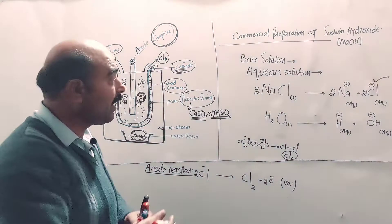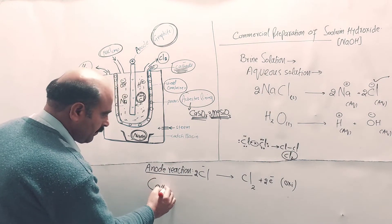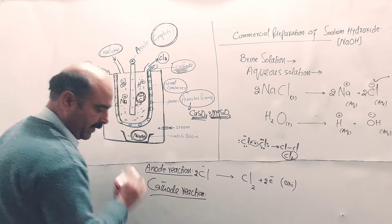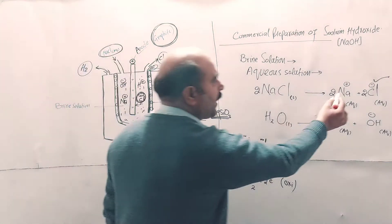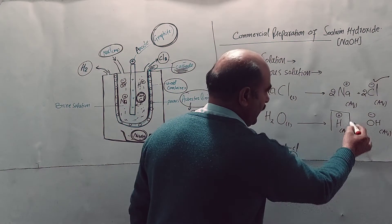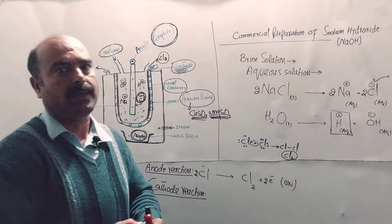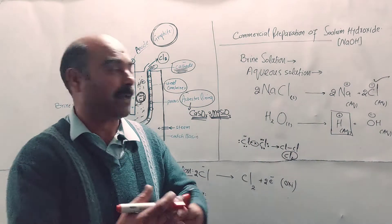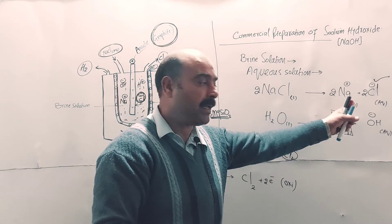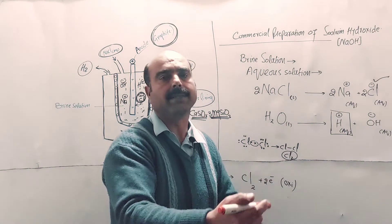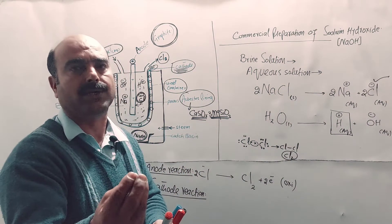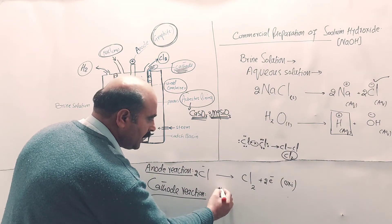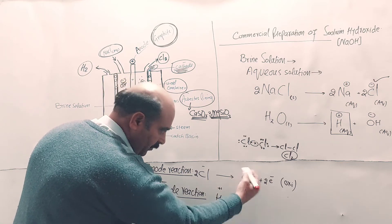Cathode reaction - cations move toward the cathode. Cations are of two types: sodium ions and hydrogen ions. As hydrogen ions have higher capacity of gaining electrons compared to sodium ions, hydrogen ions move toward the cathode, gain electrons, and reduction occurs. Sodium ions don't gain electrons.